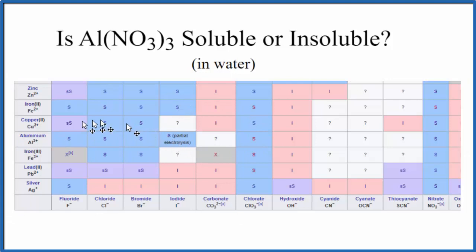And we find aluminum right here. And then we're looking for nitrate, so we'll look across the bottom here. Here's nitrate, NO3-. So we go across, and we go up, and we see that S.